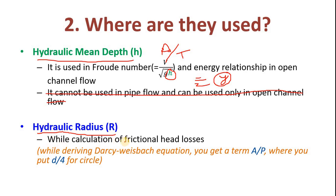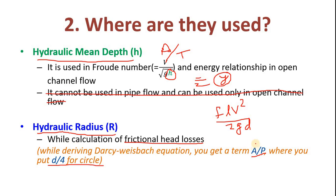Now hydraulic radius. While calculating frictional head losses we will use hydraulic radius. The formula is f L V squared divided by 2 G D. While deriving this formula you arrive at area divided by wetted perimeter. So for a circular pipe you substitute D divided by 4, because area is pi D squared over 4 and perimeter is pi D, so pi and D cancel, leaving D over 4. That is the hydraulic radius used in frictional head losses.